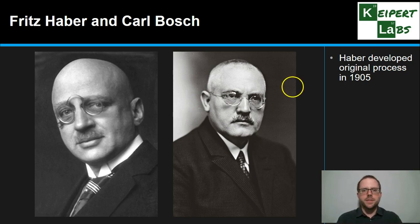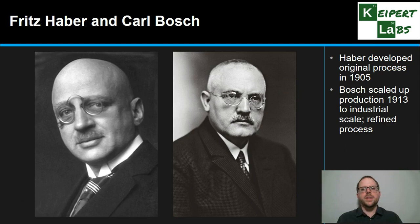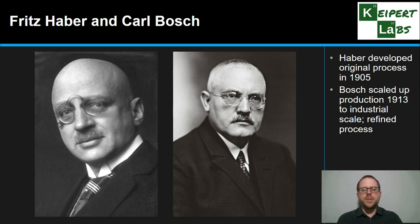Carl Bosch, who was a talented industrial chemist, took this and worked out a way to scale up the production in 1913. In order to make it larger, more efficient, and more effective, he really refined the process — being able to change up the sort of catalyst used, and working out a way to massively increase yield by recycling the reactant gases that were unused to really boost production.